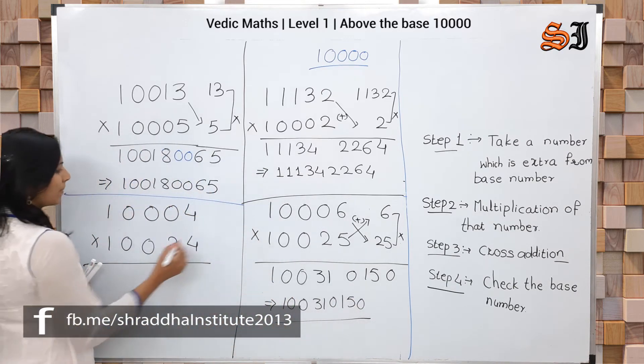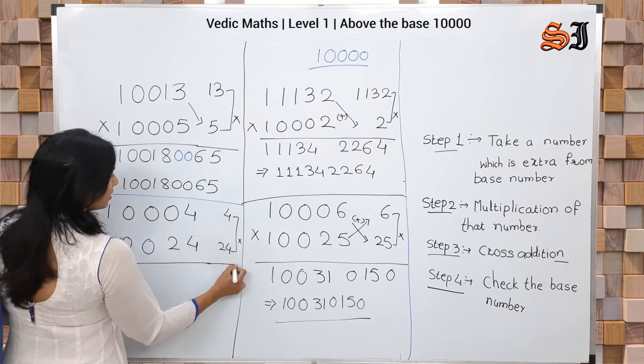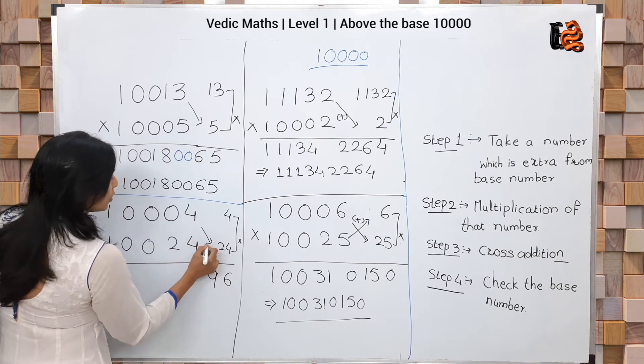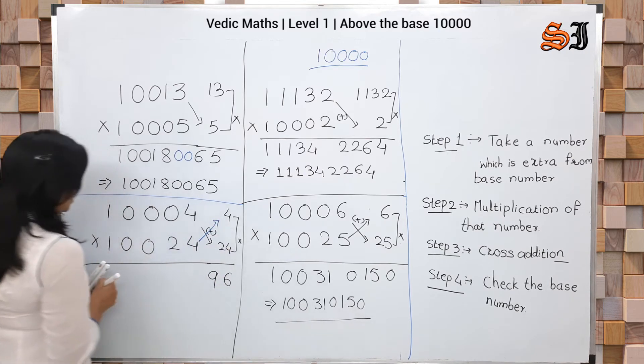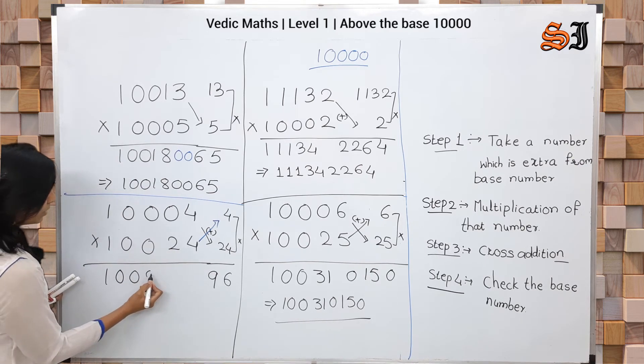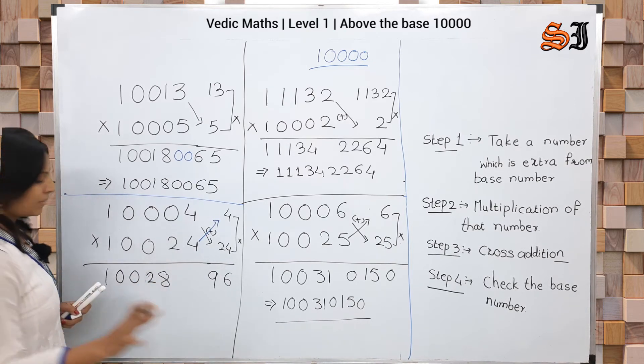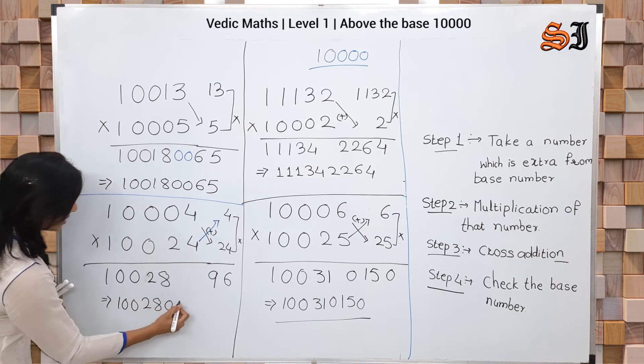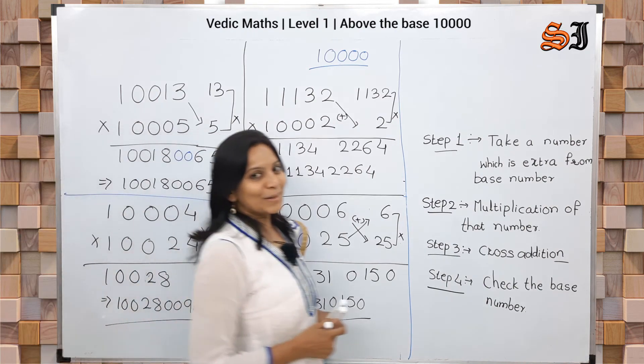Yes. Next one: here is 10004, here is 10024. Multiply: 4×4=16, 4×2=8, giving 96. Cross addition here. Answer is 10028. Right side has four numbers, so the answer is 1002800096.